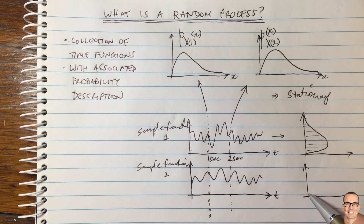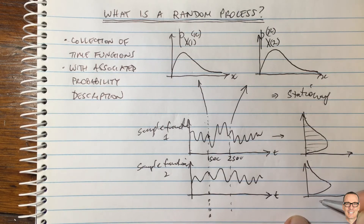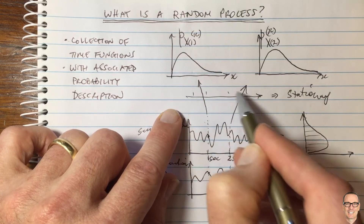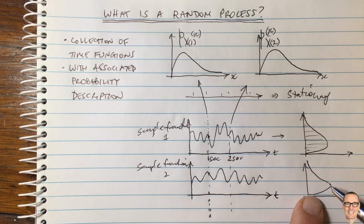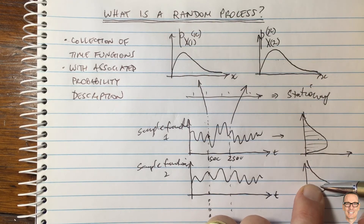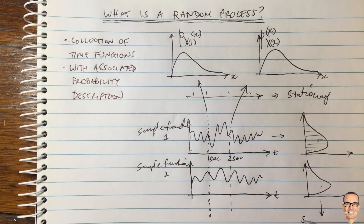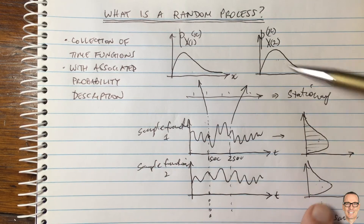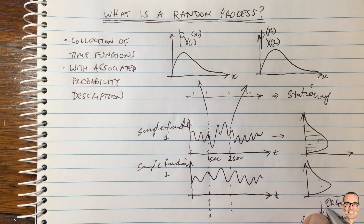Stationary was across all the different times having the same PDFs. Now, if all the different sample functions have the same PDF as each other, and the same as the actual ensemble PDF, then it is ergodic — E-R-G-O-D-I-C. So if each sample function histogram has the same PDF as the others and as the random variable stationary PDF, then it is ergodic. This is an ergodic random process.